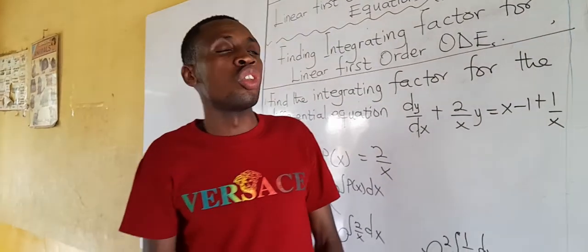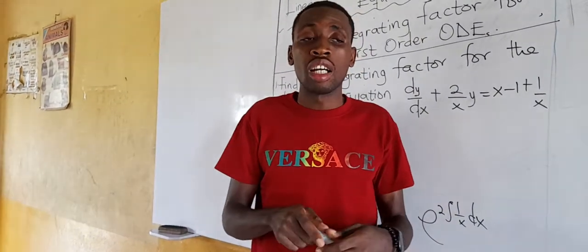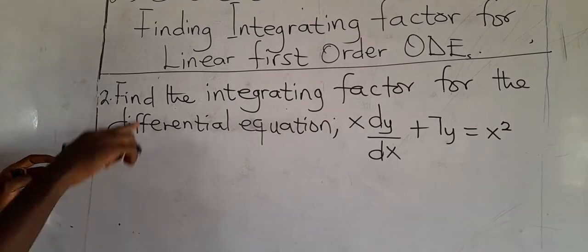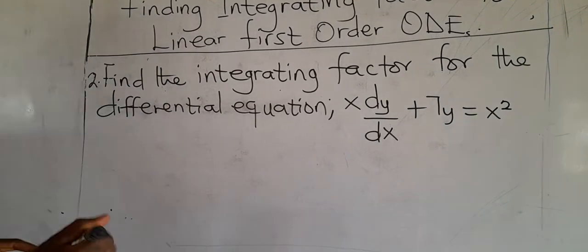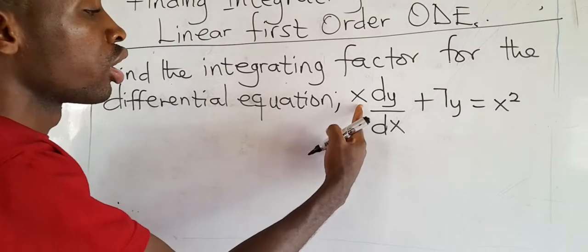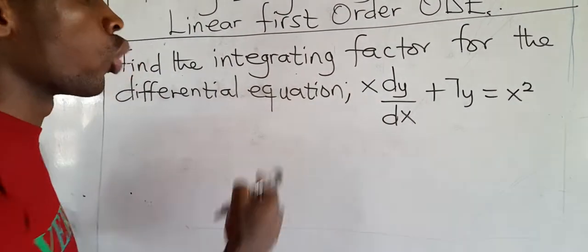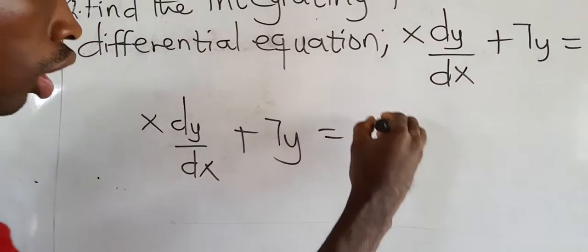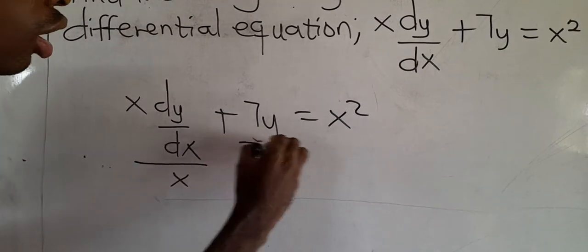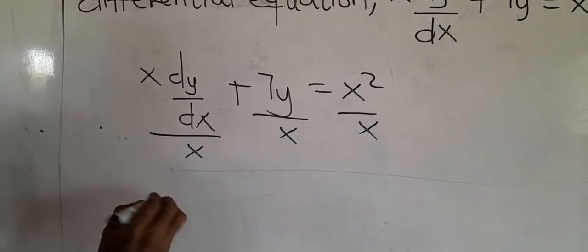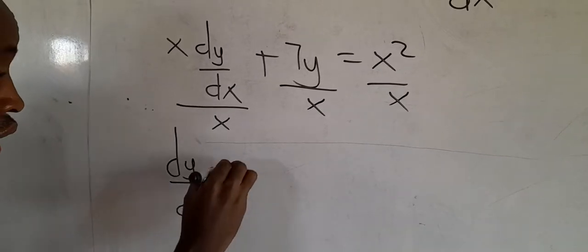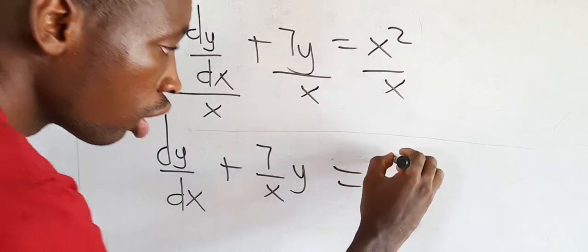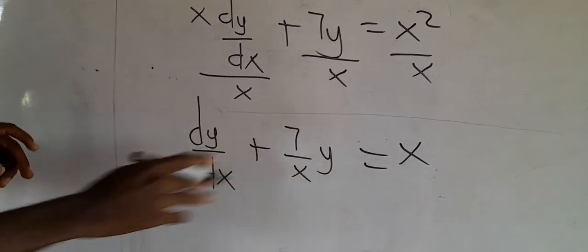I hope you get that. I'll solve another one so you will be comfortable finding the integrating factor. Find the integrating factor for the next differential equation. This is in the form of a linear first order ODE; however, check the coefficient of the derivative — it is not 1. So we need to divide through by x: dy/dx + (7/x)y = x. Now P(x) = 7/x.